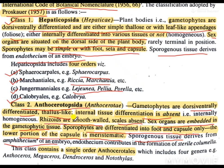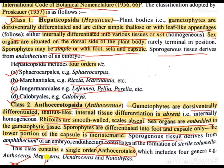The Anthocerotopsida class contains only one order, which is known as Anthocerotales. Under this single order there are four genera: Anthoceros, Megaceros, Dendroceros, and Nototilus.